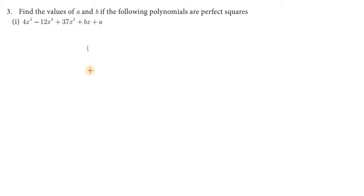Hello students, welcome to Strong Success Education Academy. This is exercise 3.8. We need to find the values of A and B if the following polynomials are perfect squares.